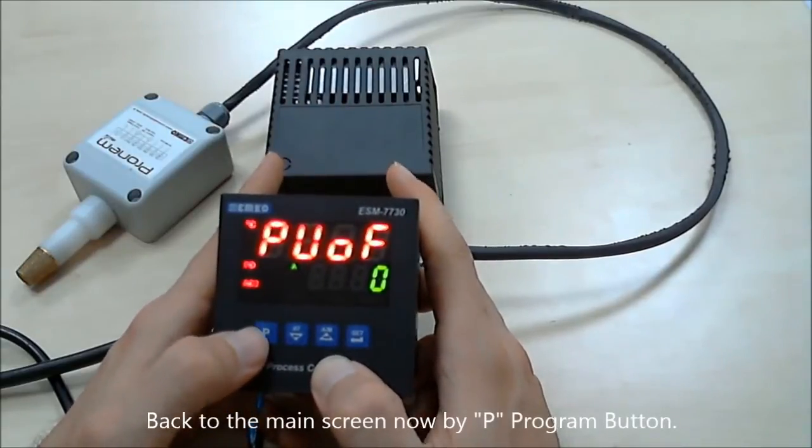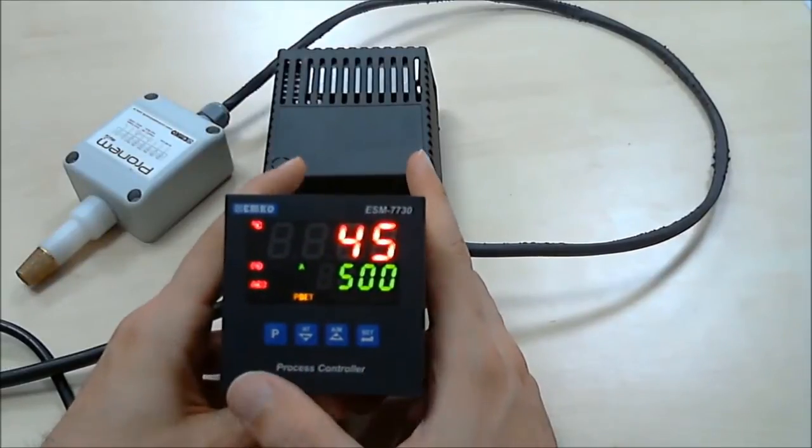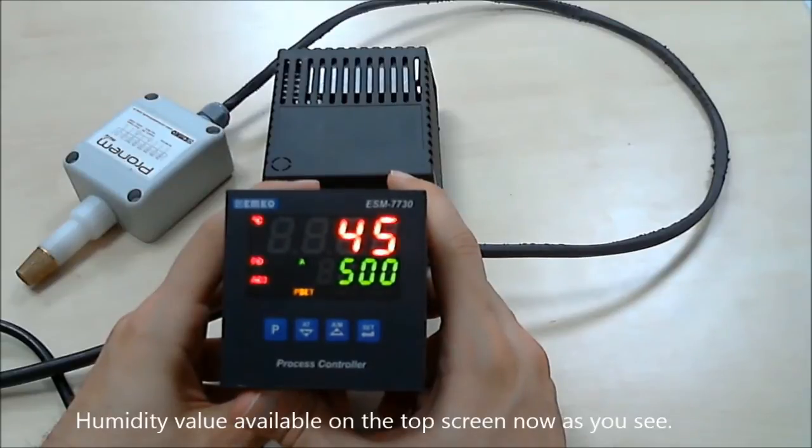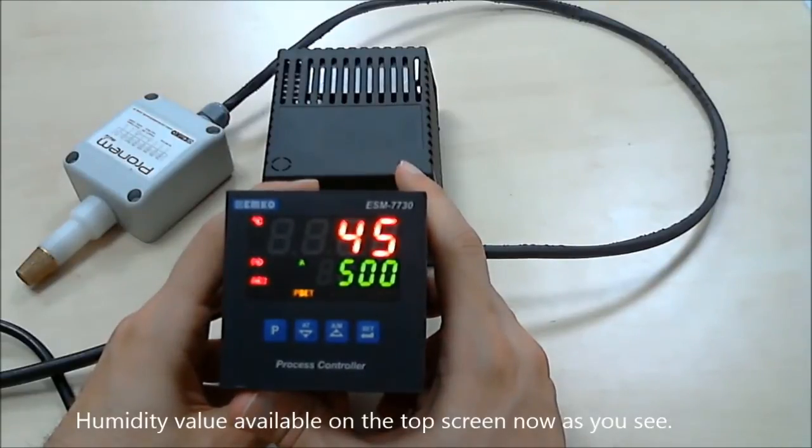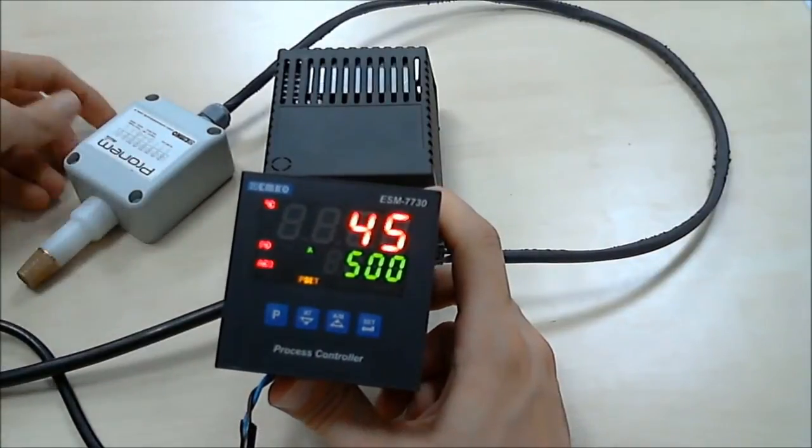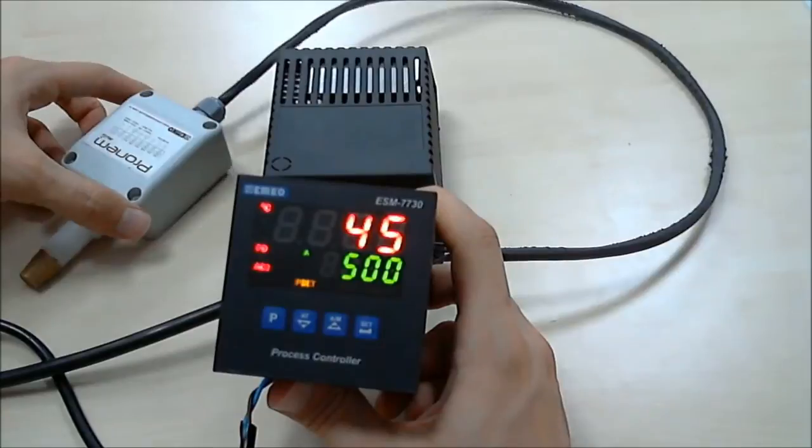Using the program button, come back to the main screen. We see the humidity value on the top of the screen. Now we will see how it changes with the humidity device.